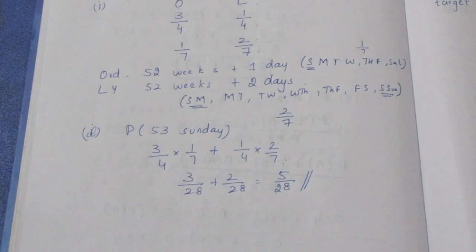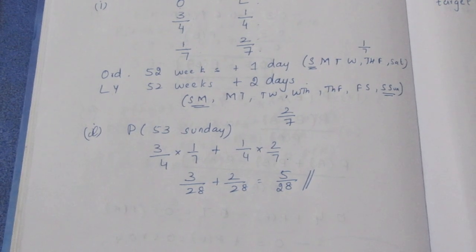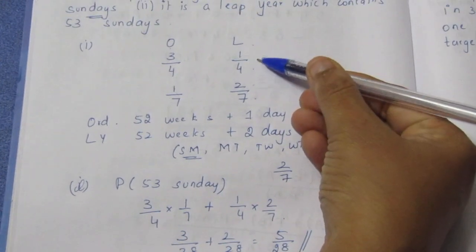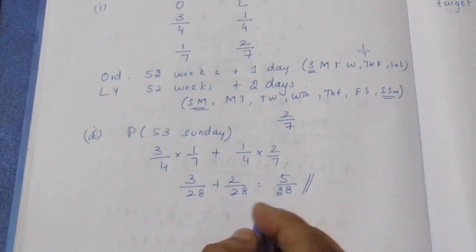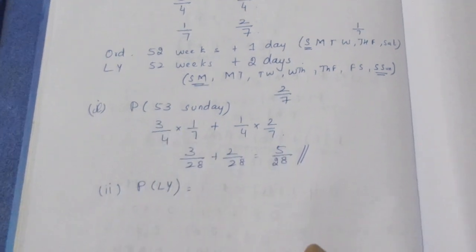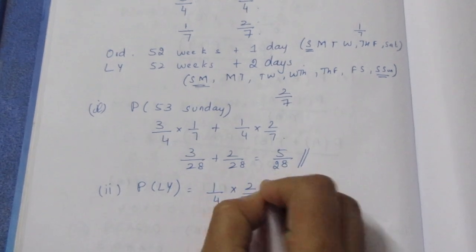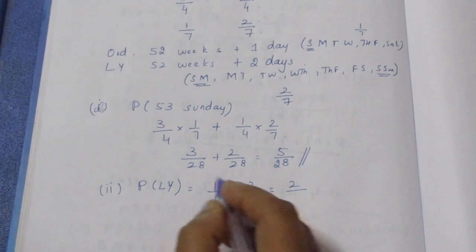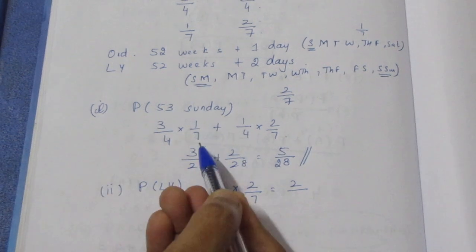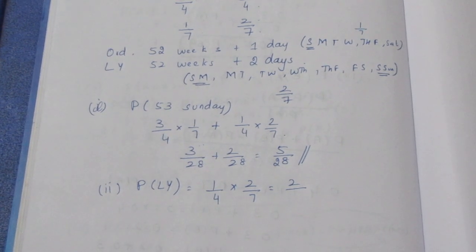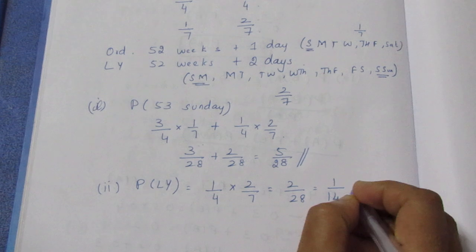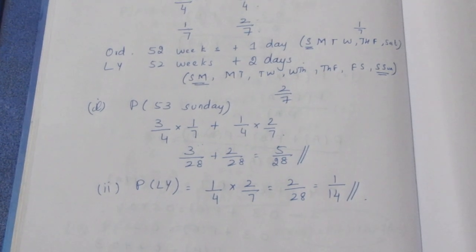Second part question: it is a leap year which contains 53 Sundays. So for a leap year containing 53 Sundays, you multiply: P(leap year) × P(53 Sundays | leap year) = 1/4 × 2/7 = 2/28. Cancel: 1 by 2, so this gives 1/14. The second part answer is 1/14.